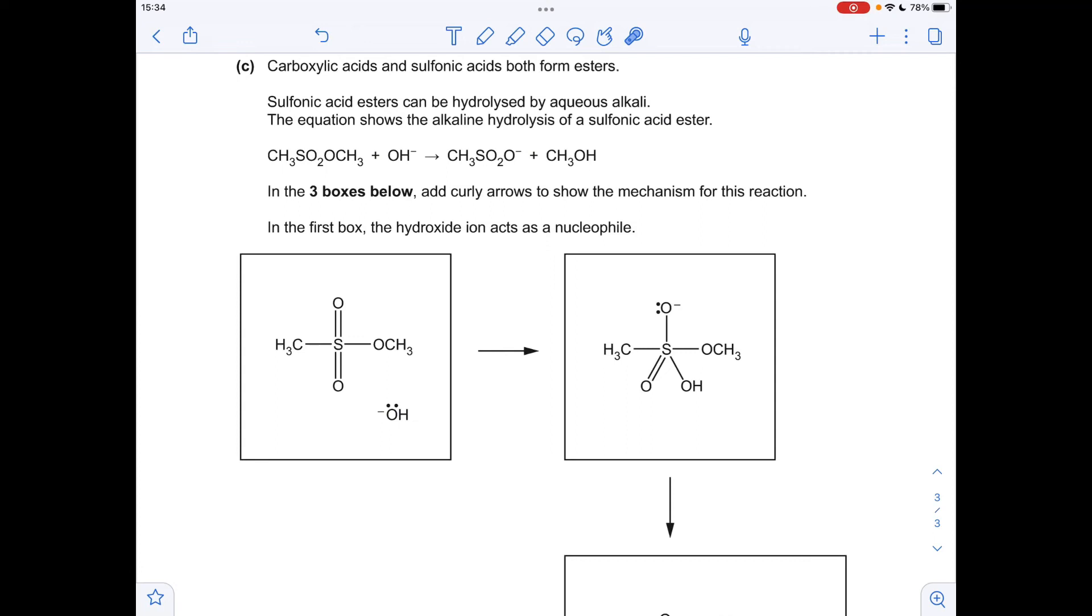And finally, part C, where I've got to come up with the curly arrows for this unfamiliar mechanism. So the way I tackle these, I look at the after the arrow box and think, well, what's changed going from that to what was before the arrow? So you can see we've got this OH bonded to the sulfur now, so curly arrows must have come from the OH minus, the lone pair on the OH minus, to that sulfur.